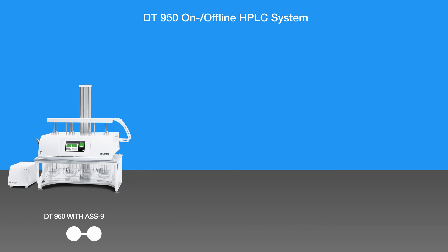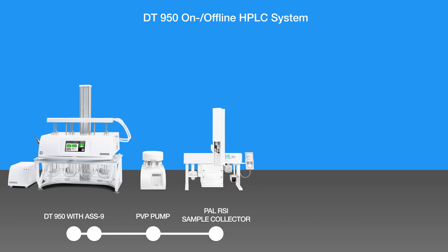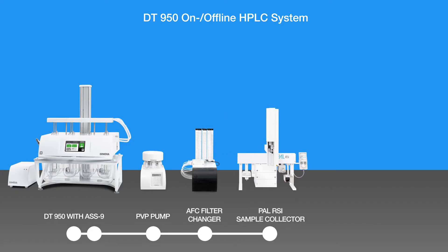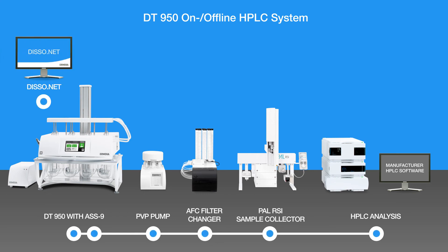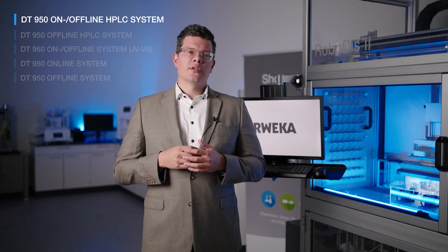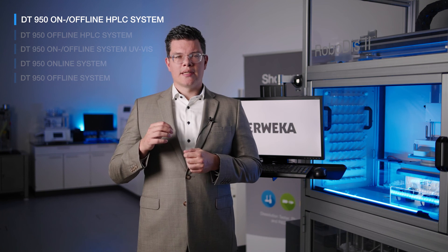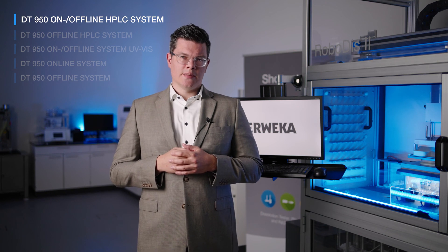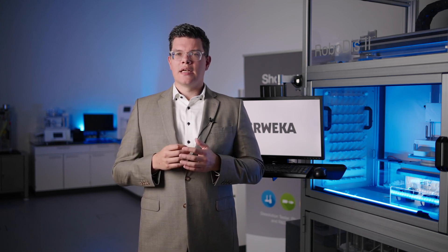A DT9N50 with an automated sampling station ASS9, a PVP piston pump — which is required for optional secondary filtration — a PAL-RSI autosampler for sample collection, and the HPLC analytic system itself. HPLC often requires secondary filtration, so an automated filter changer is recommended. disso.net 4.6 controls every component up until the HPLC analysis, which gets triggered by a signal to automatically start analyzing the directly injected sample from the six-port HPLC valve, specifically engineered for our dissolution HPLC systems. This is real HPLC online automation without any gap between the dissolution test and the HPLC analysis.